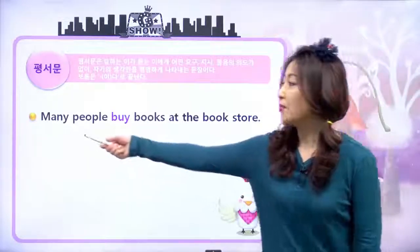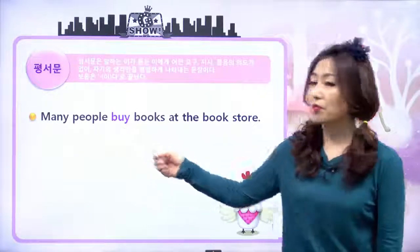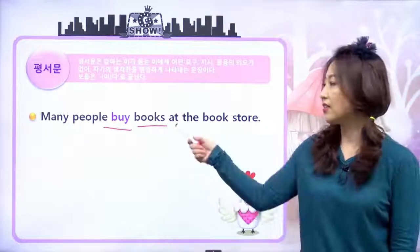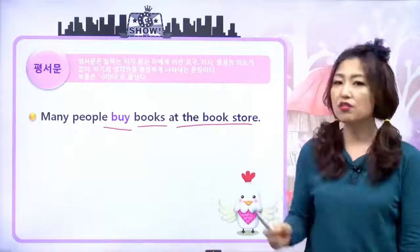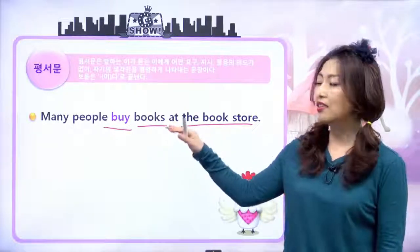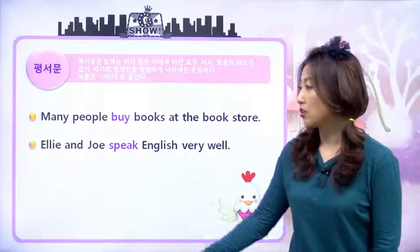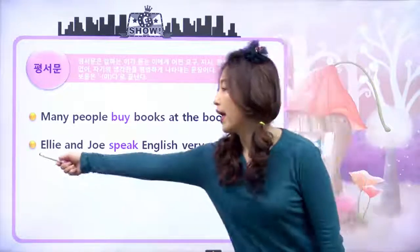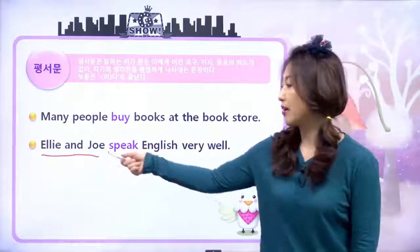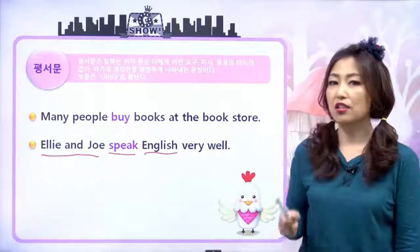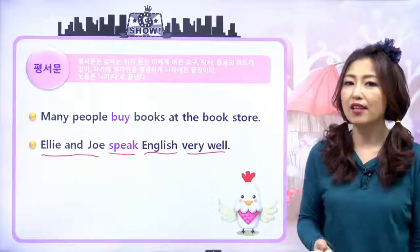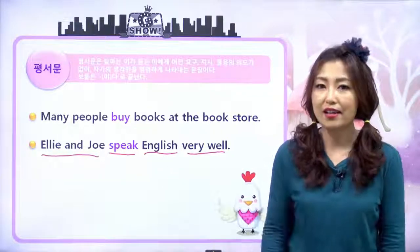그래서 many people, 많은 사람들은 buy, 사요. books, 책들을 어디에서? At the bookstore. 서점에서 많은 사람들이 책을 산다. 그리고 Ellie and Joe, Ellie와 Joe는 speak, 말한다. English, 영어를 very well, 아주 잘 말한다. Ellie와 Joe는 영어를 참 잘해.